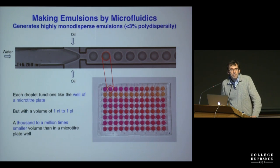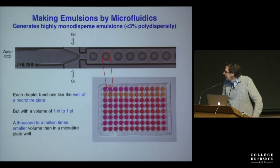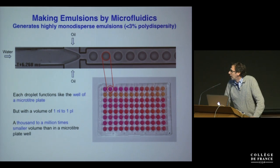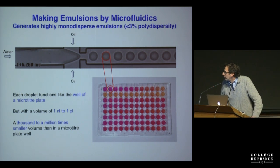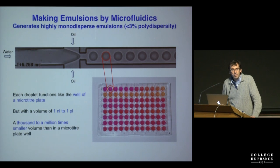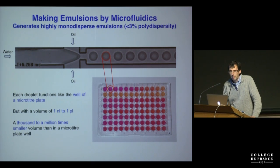These droplets have a volume typically between about a nanoliter and a picoliter, which means they are 1,000 to a million times smaller than the smallest volume you can work with in microtiter plate wells.